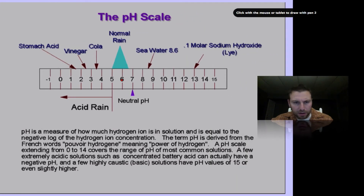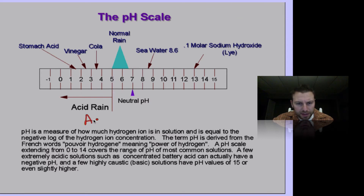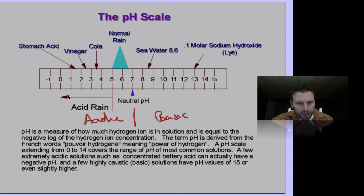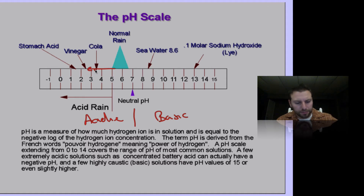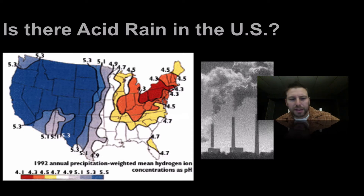If we look at a pH scale, anything from 0 to 7 is going to be considered acidic, and anything from 7 to 14 is basic. Acid rain falls on the acidic side, generally lower than about 5 to 5.5. So acid rain is going to have a pH lower than 7, specifically about 5.5 and lower.